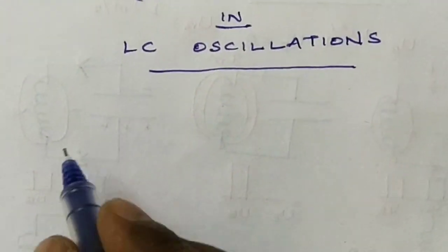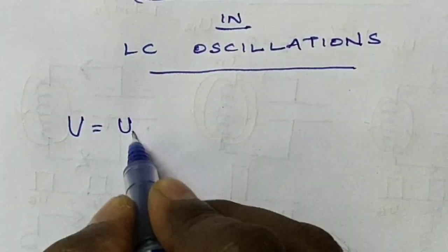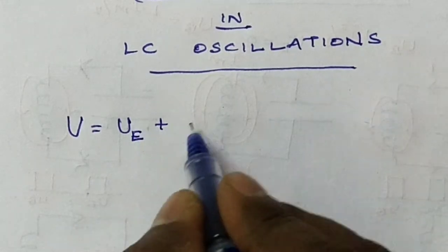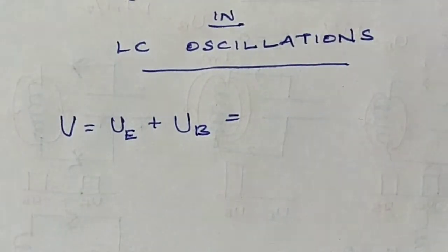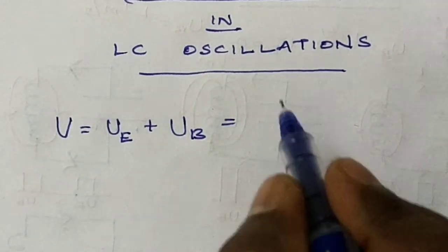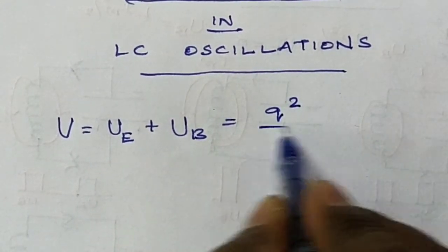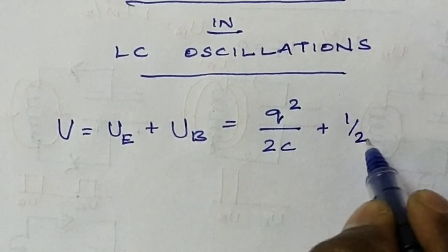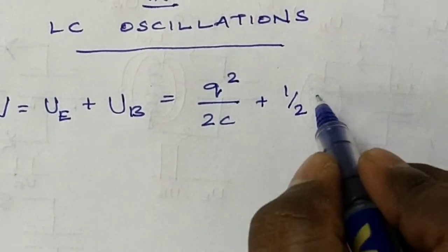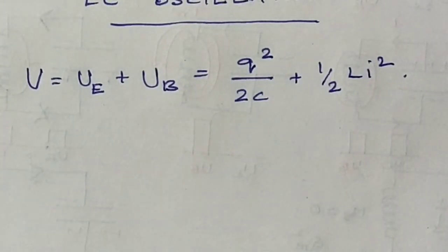Total energy means epsilon equals epsilon_E, the electrical energy, plus the magnetic energy. The electrical energy is Q squared by 2C, and the magnetic energy is one-half L I squared. We are taking three cases.